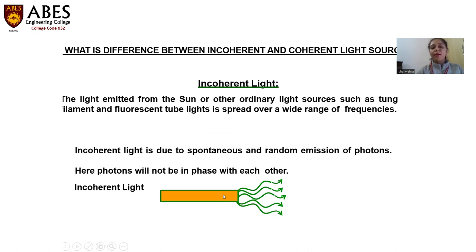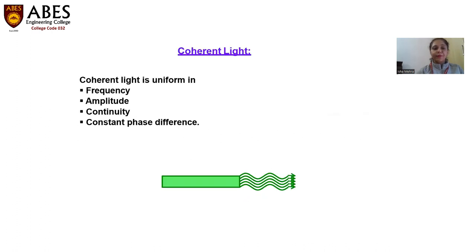The photons in incoherent light will not be in the same phase and will not be parallel to each other. In a coherent light source, all the photons and light rays are having a constant phase difference among themselves. They are the same in frequency, amplitude, and continuity. This will be a coherent light.